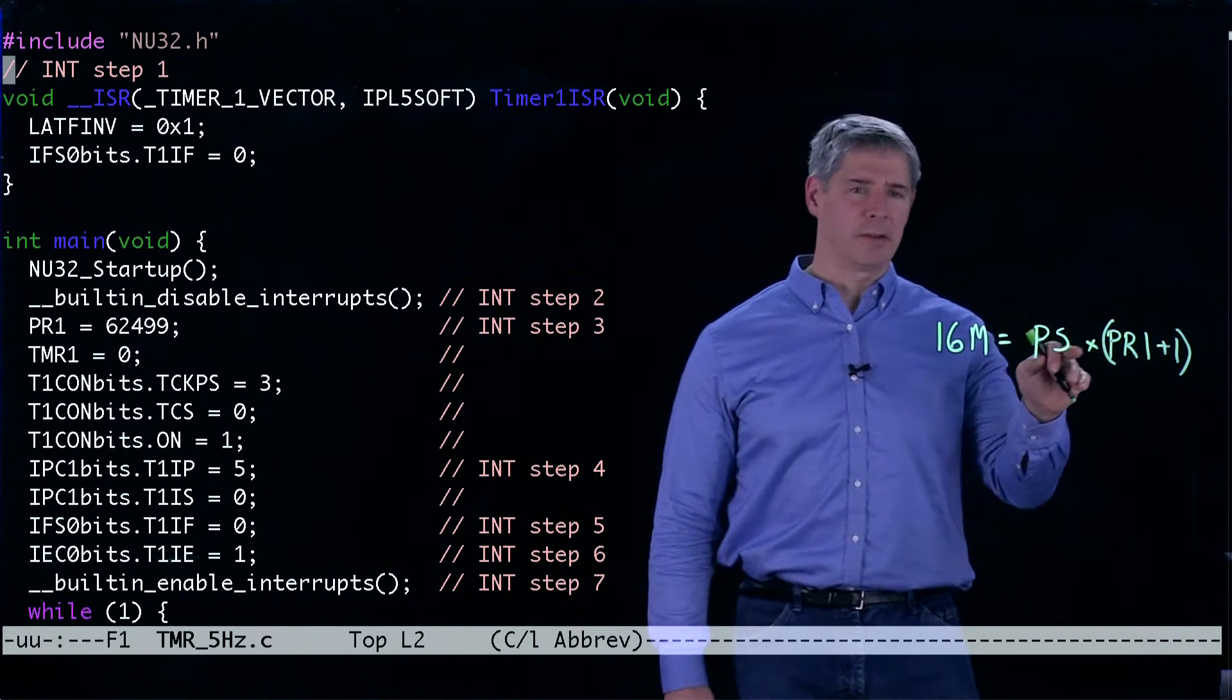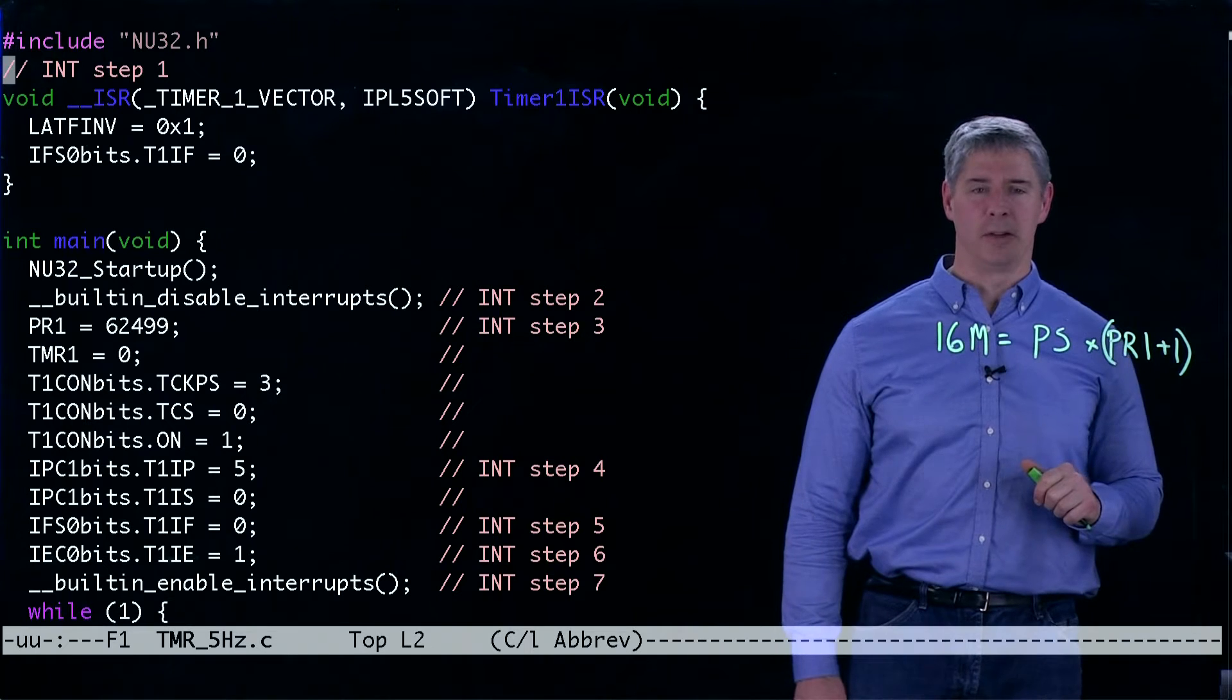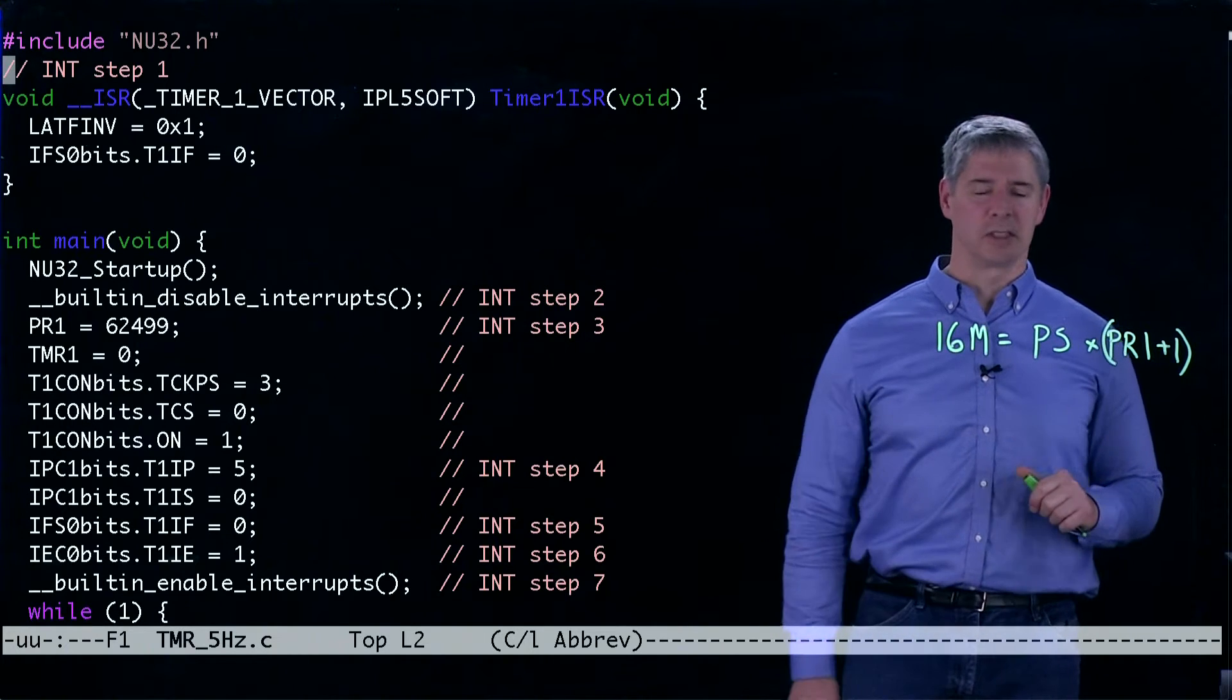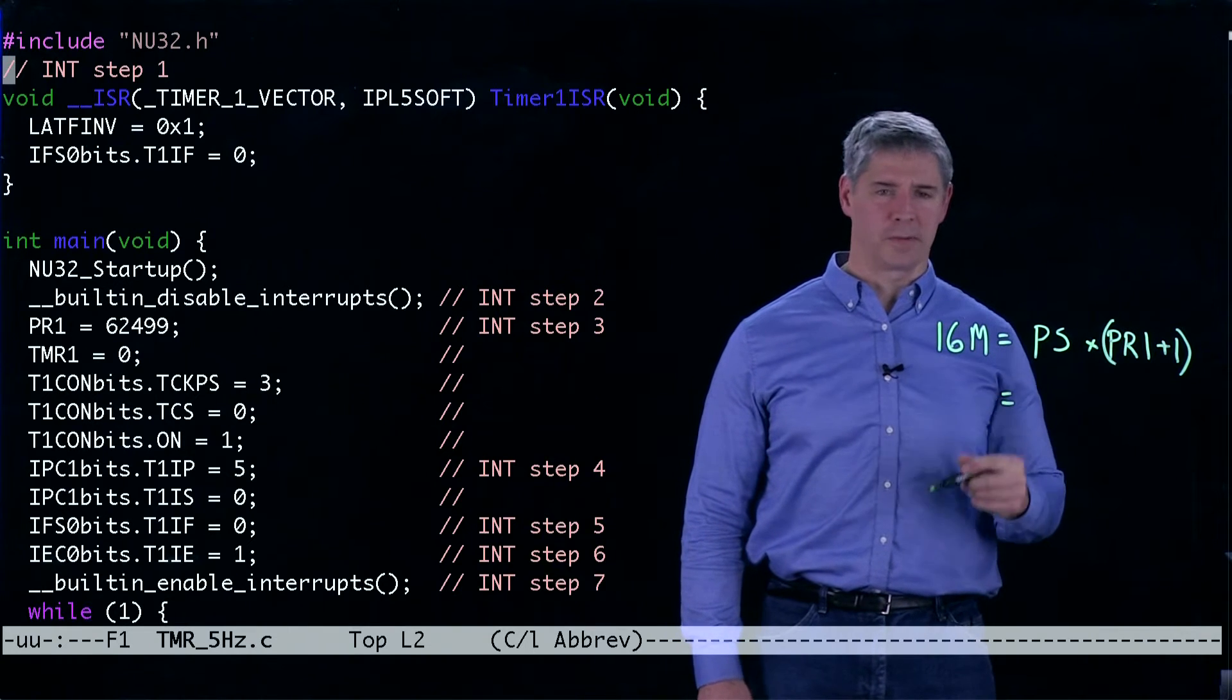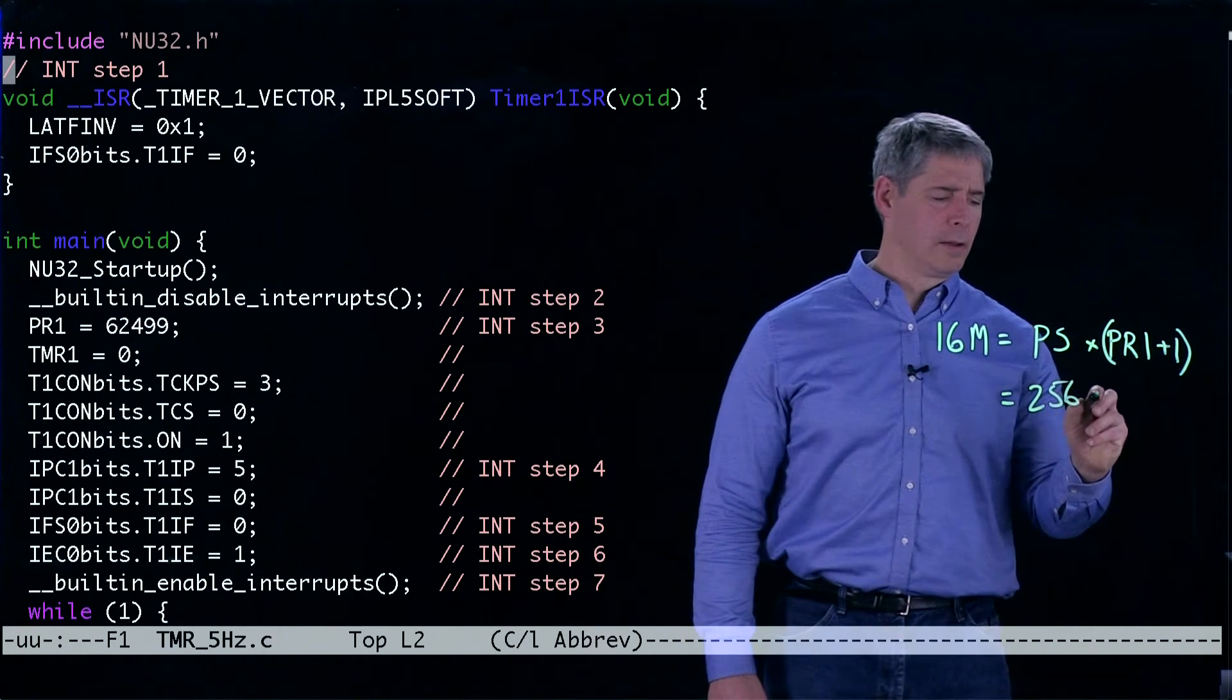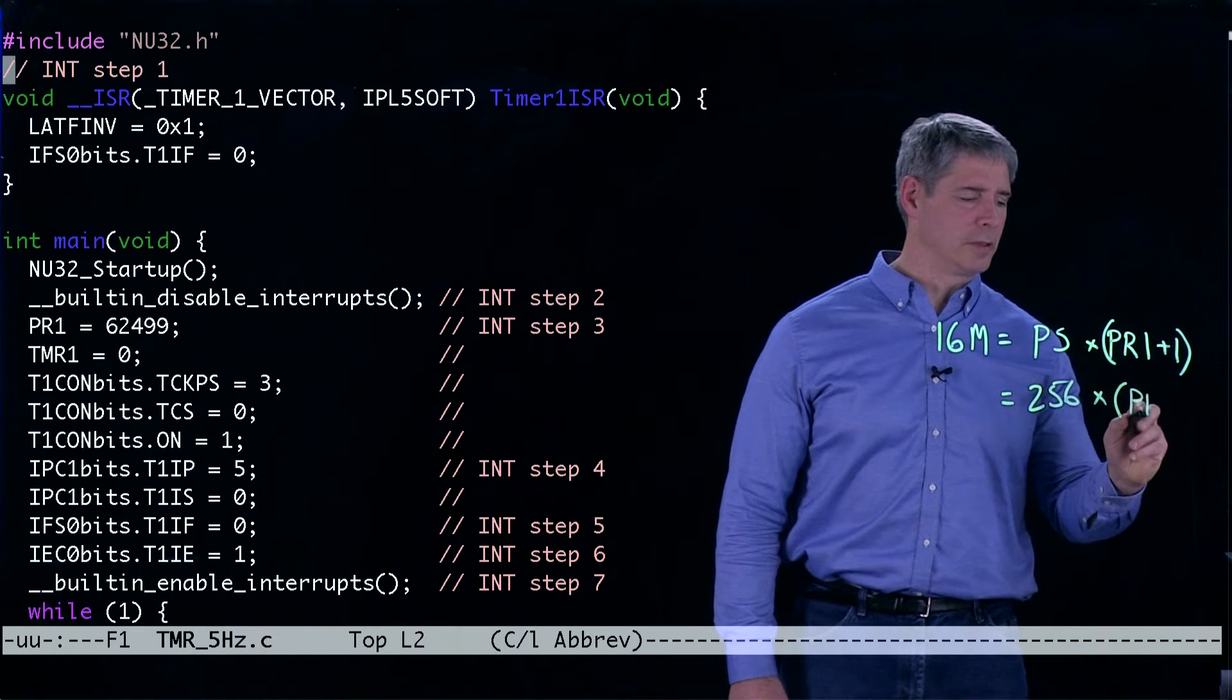So let's choose 256. We only have a few choices for the prescaler. Let's choose a large number, the largest that's available to us.